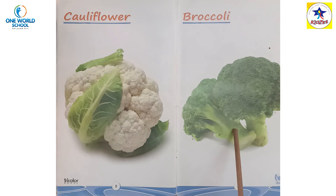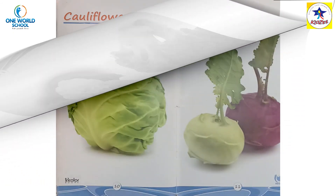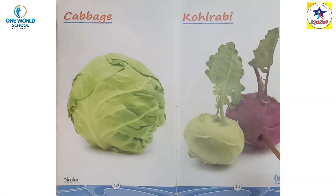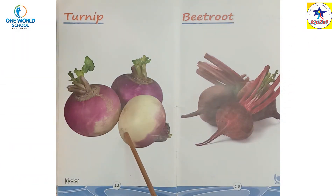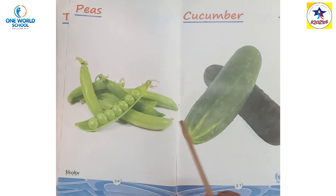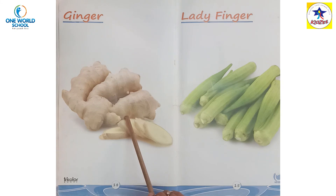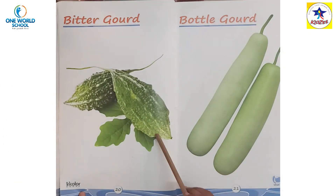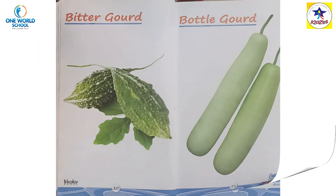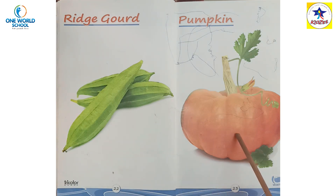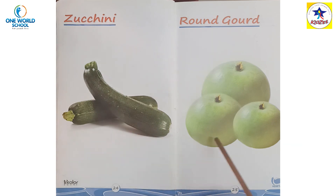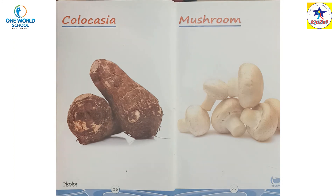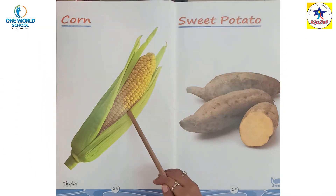Cauliflower. यह भी cauliflower है — green color का होता है। Cabbage. यह एक type का भीट होता है, इसका नाम है kohlrabi। Turnip. Beetroot. Peas — आप सबका favorite। Cucumber. Ginger. Lady finger. Brinjal. Garlic. Bitter gourd. Bottle gourd. Ridge gourd. Pumpkin. Zucchini. Round gourd. Colocasia. Mushroom. Corn. Sweet potato. Chili.